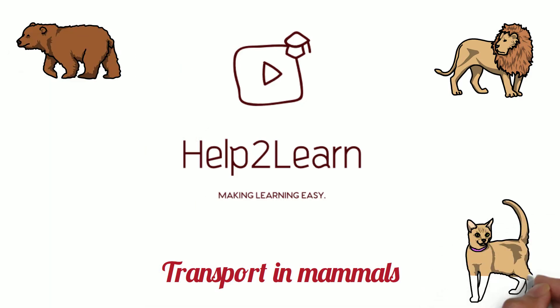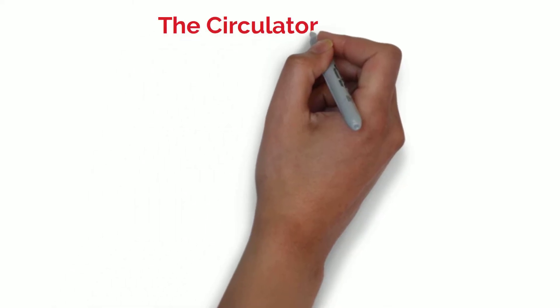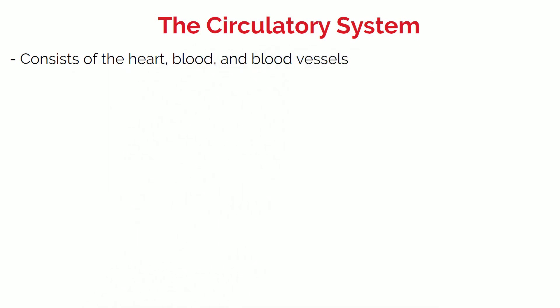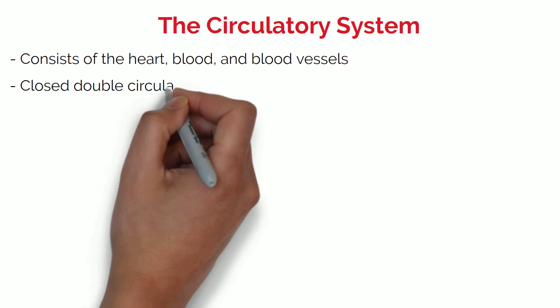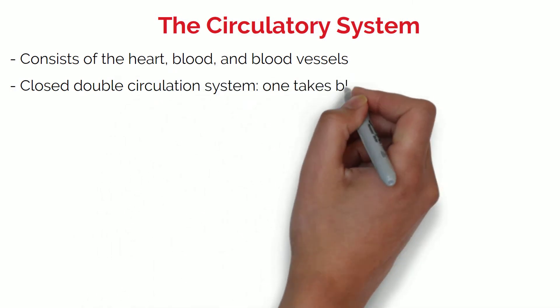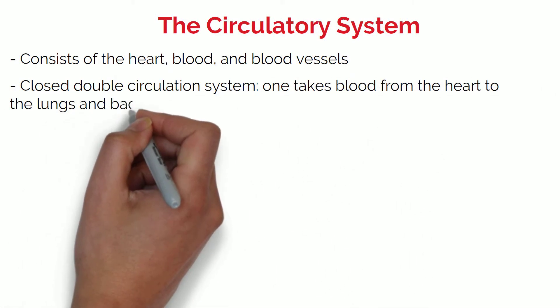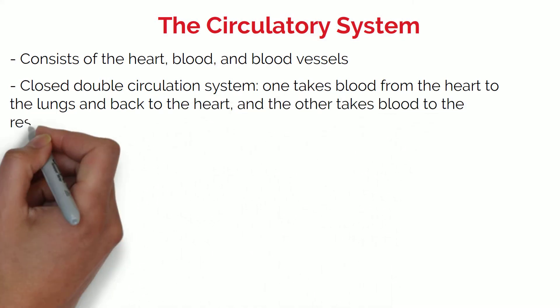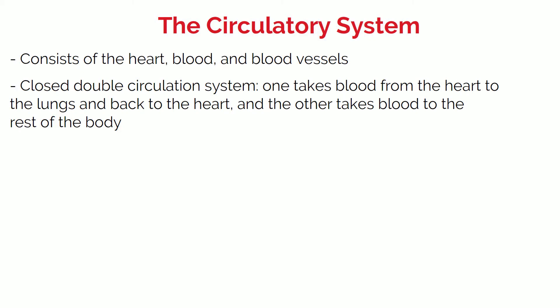Mammals have an important system for transporting blood and dissolved substances around the body, known as a circulatory system. The mammalian circulatory system is described as a closed double circulation, which consists of the heart, blood and blood vessels. Double circulation refers to the two circuits of blood flow: one takes blood from the heart to the lungs and back, and the other takes blood from the heart to the rest of the body to supply tissues and cells.